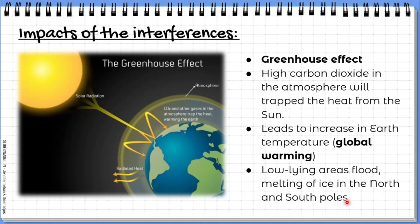So what are the impacts of these interferences? One impact is the greenhouse effect — high carbon dioxide in the atmosphere traps heat from the sun, leading to an increase in the Earth's temperature, which we call global warming, or pemanasan global. The effect of global warming includes the melting of ice at the North and South Poles — di kawasan Kutub Utara dan Kutub Selatan akan mengalami pencairan — and this may cause low-lying areas to flood.